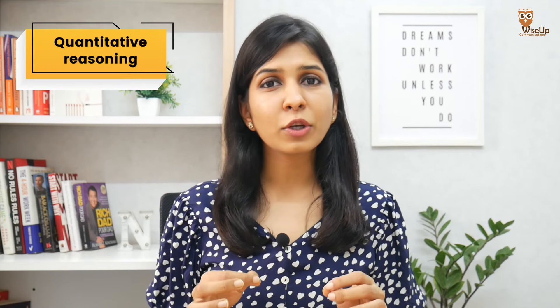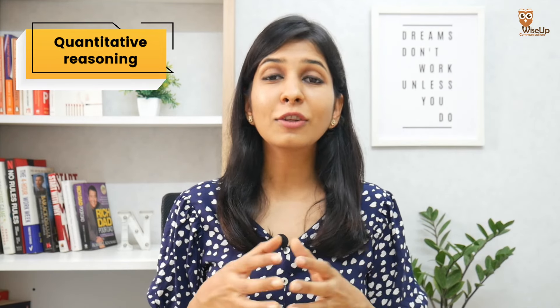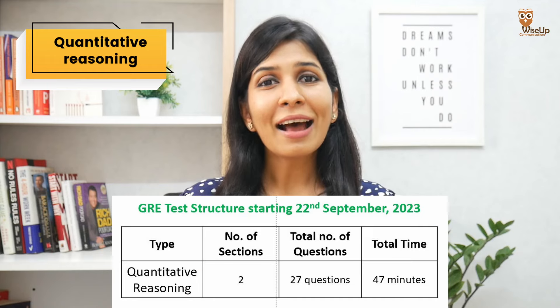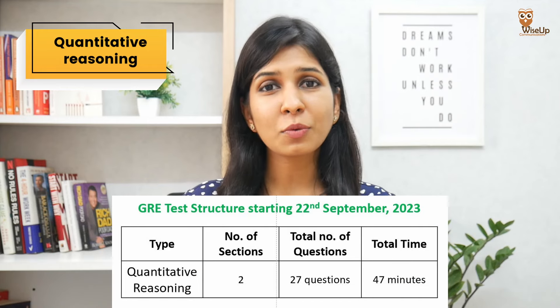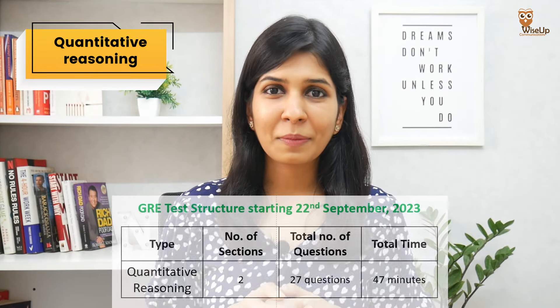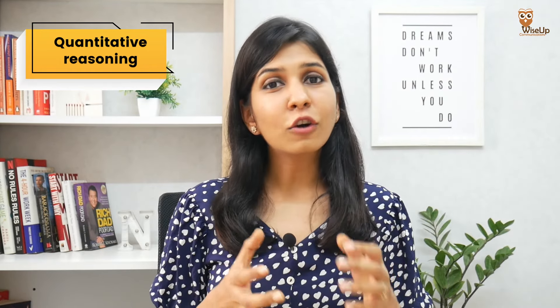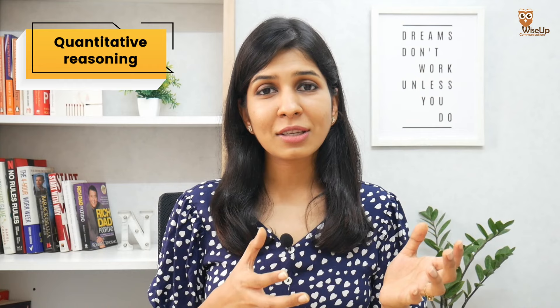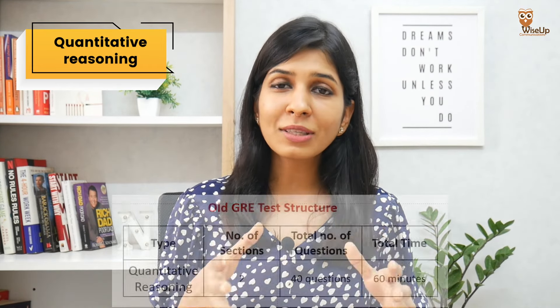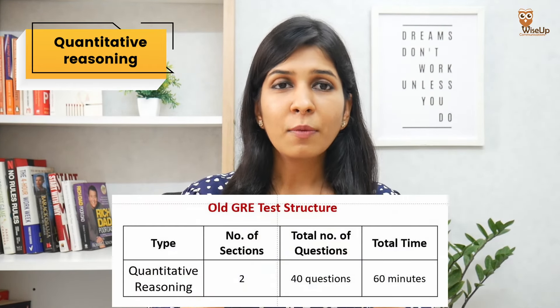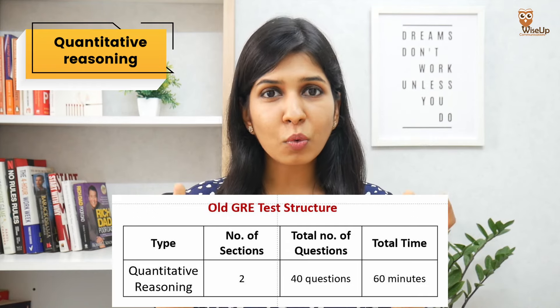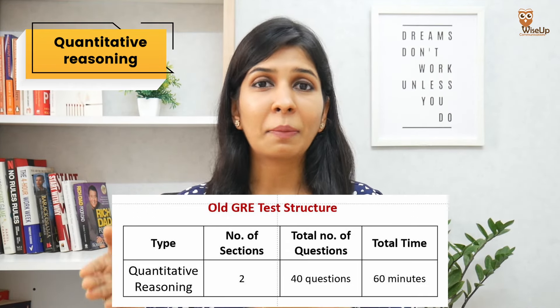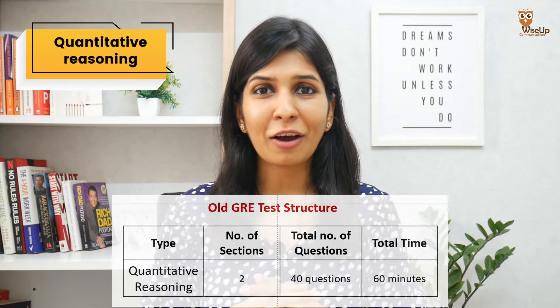Similar to Verbal Reasoning, Quantitative Reasoning is also going to consist of two sections with a total of 27 questions, and the time allotted is 47 minutes. Earlier, the Quantitative Reasoning section also had two sections with 20 questions each, resulting in a total of 40 questions to be attempted in one hour.